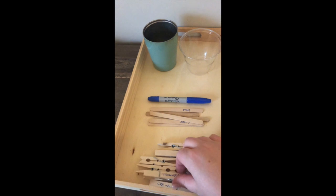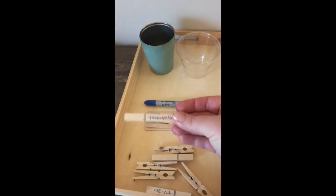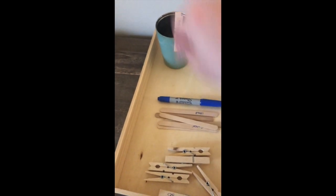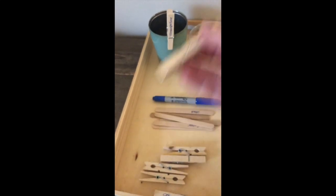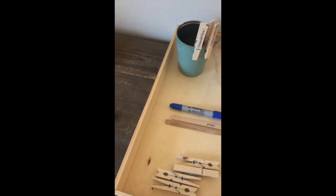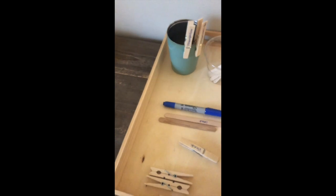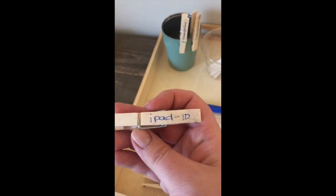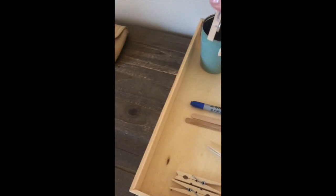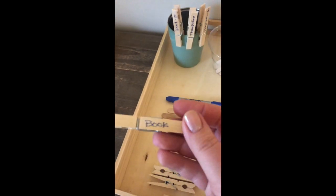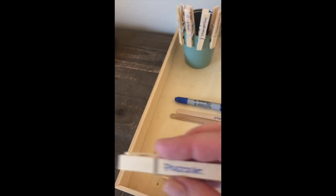So what I do is I write the activities on either the clothespins or the popsicle sticks. And we put them in. And for some of them I put time limits on them. So here's the iPad for 10 minutes. And here's a book. Here's a puzzle.